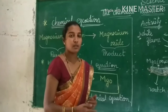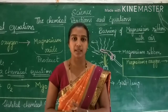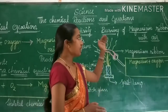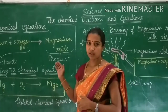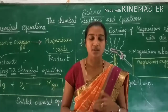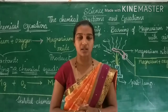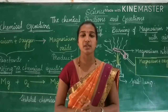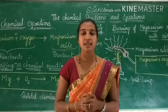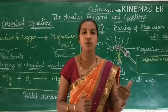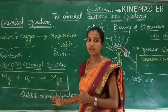Till now we discussed some basic concepts of chemistry, chemical reactions, some observations to determine chemical reactions, and one activity — burning of magnesium with air and writing a chemical equation. I will leave some homework regarding this concept. First: what is a chemical reaction? Second: which are the observations to determine a chemical reaction? Third: why is the magnesium ribbon cleaned with sandpaper before performing the experiment? And the last one: what is the skeletal form of a chemical equation?